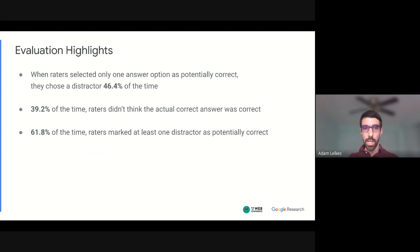Also regardless of how many answer options they marked as correct, 39% of the time those answer options did not include the correct answer, it only included distractors. And finally, almost 62% of the time raters mark at least one of the distractors as a potentially correct answer option. So this shows that our questions are not too easy, but also not impossibly difficult, which is what we were aiming for.